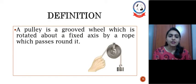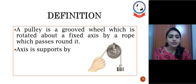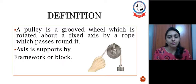Pulley is a grooved wheel which is rotated about a fixed axis by a rope which passes around it. Axis is supported by framework or block. We can see here in between there is an axis and a grooved wheel around which a rope has been passed.